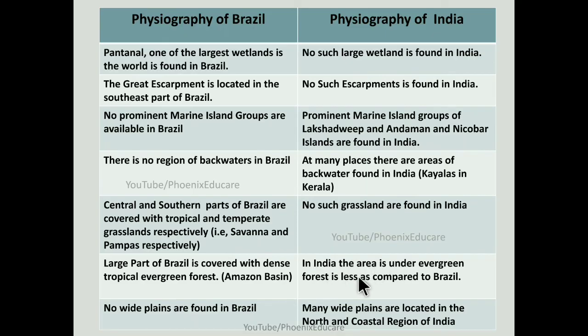No alluvial plains are found in Brazil, but many alluvial plains are located in the north and coastal regions of India — specifically in the Northern Indian Plains and eastern coastal plains. No such plains are available in Brazil. These are the differences between the physiographic divisions of India and the physiography of Brazil. Hope you have understood — please give a like, share the video with your friends, and subscribe to the channel for more videos. Thank you for watching.